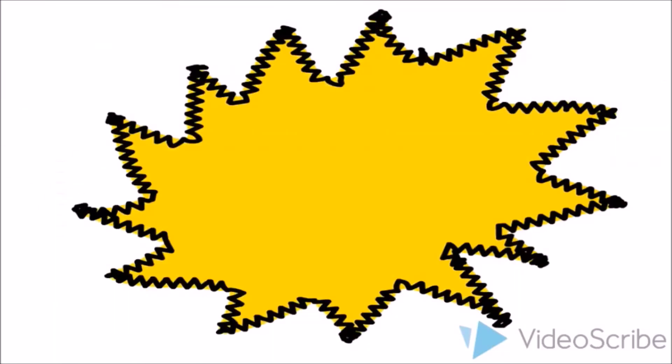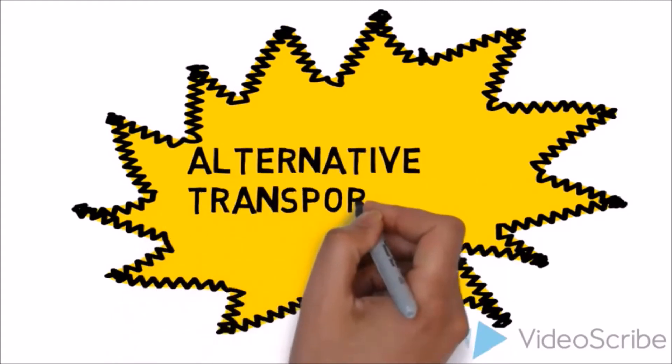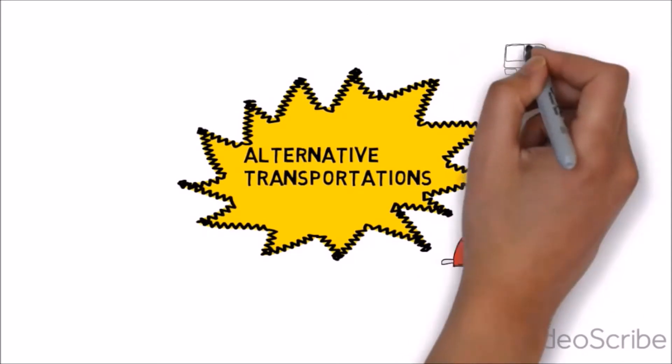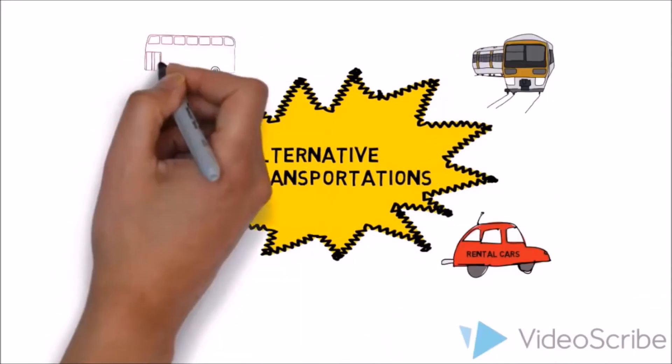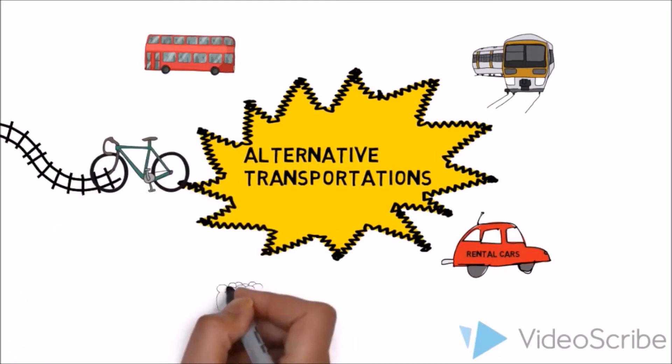One solution to reduce the overconsumption of personal vehicles is to opt for alternative modes of transportation, such as riding cars instead of owning one, taking the MRT, riding public buses, cycling, and even arranging for carpooling could greatly reduce the overconsumption of personal vehicles.